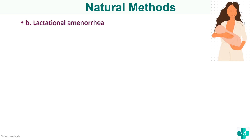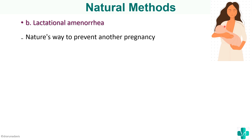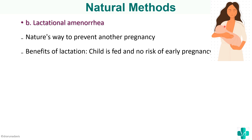The next natural method is lactational amenorrhea. During the time the mother lactates or gives milk to the baby, she will be amenorrhoeic because of decreased levels of hormones. It is nature's way to prevent another pregnancy. The advantage is that the child is fed through lactation and there is no risk of early pregnancy.